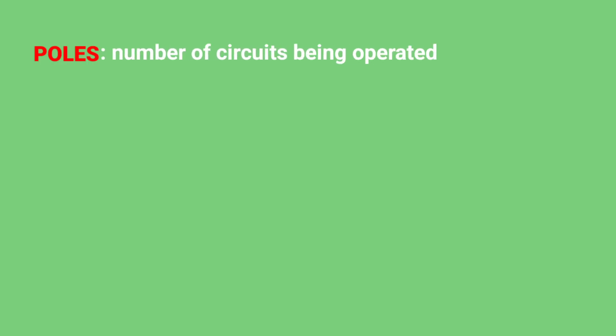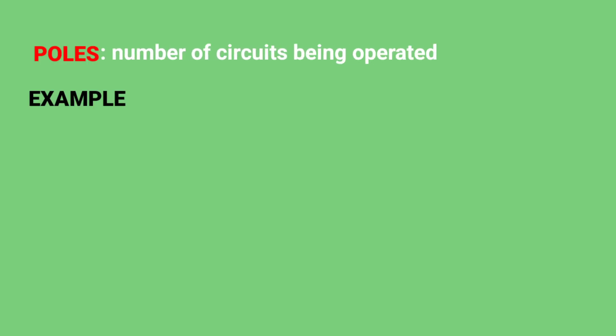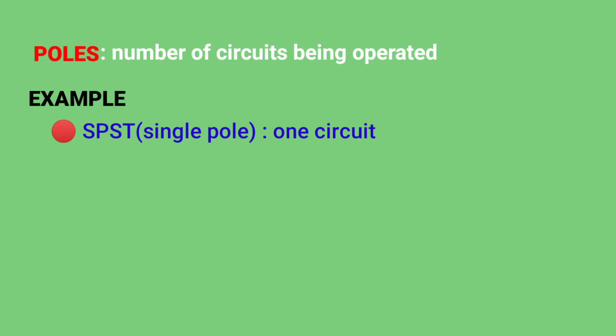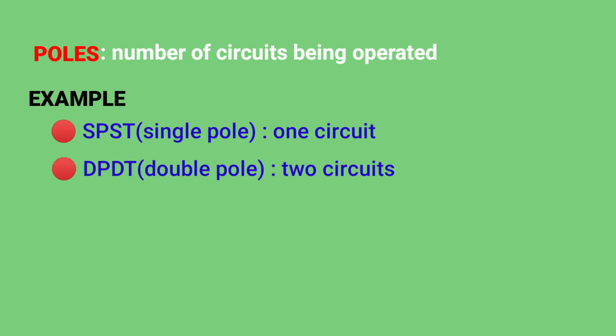What are these poles and what are these throws? Simply, the amount of circuits controlled by the switch is indicated by poles. A single pole switch controls only one electric circuit, while a double pole controls two independent circuits. Throw means how many different output connections every switch pole can connect its input to.